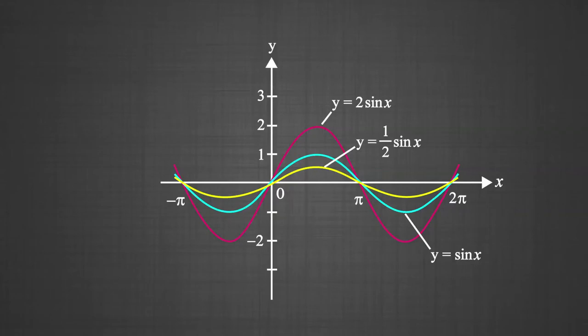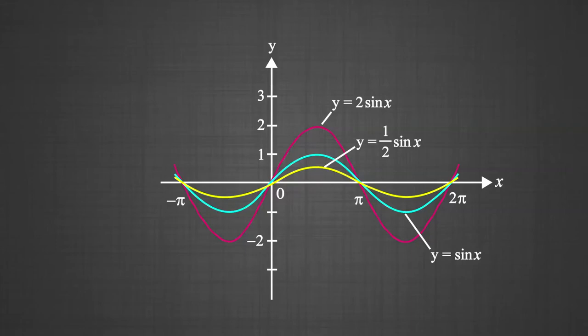For the graph of y = ½ sin x, we multiply the graph of y = sin x by ½. This has the effect of stretching the graph vertically by a factor of ½. On this graph, we can see the comparison: the pink line represents y = 2 sin x, the blue line is the graph of y = sin x, and the yellow line shows the graph of y = ½ sin x.